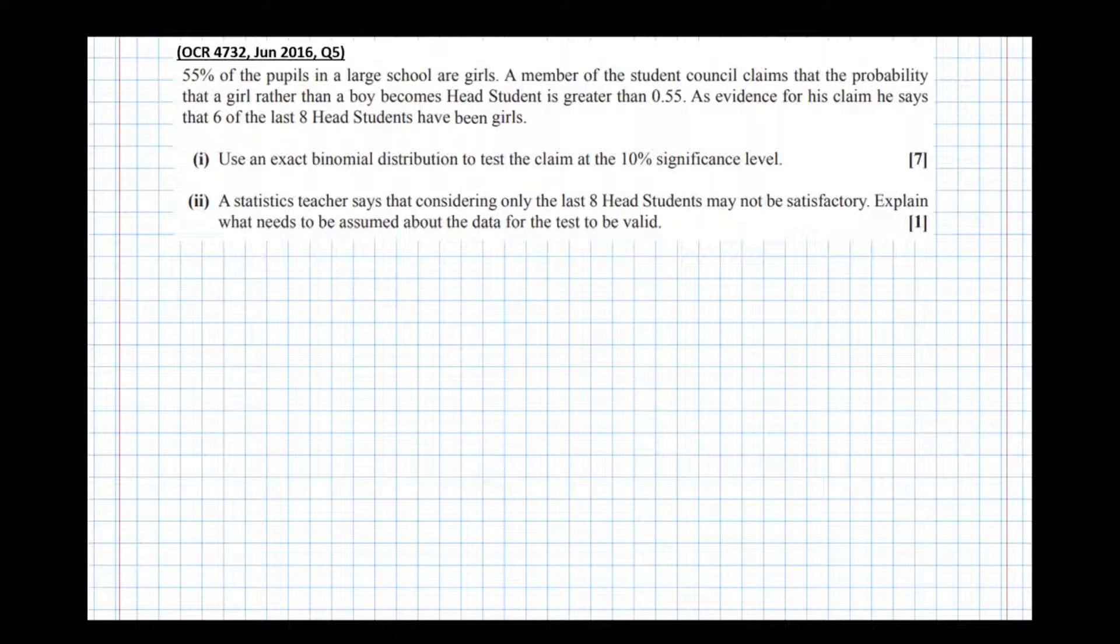Right, so if there was truly an equal chance of boys and girls becoming a head student, then we'd expect, because 55% of the students are girls, that around 55% of them would become head student. Likewise, there's 45% boys, so over the years you'd expect that 45% of boys become a head student. However, what they're claiming here is the probability of a girl becoming a head student is greater than 0.55, i.e. it's more likely that girls are going to become head student. Girls are better at becoming head student than boys proportionally.